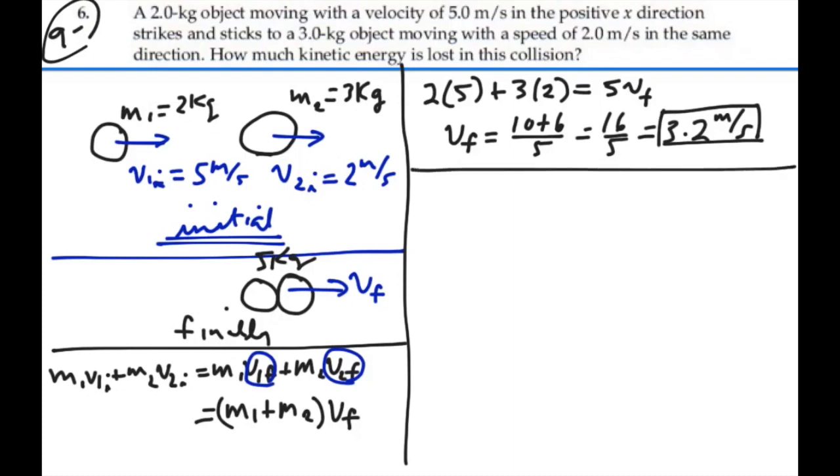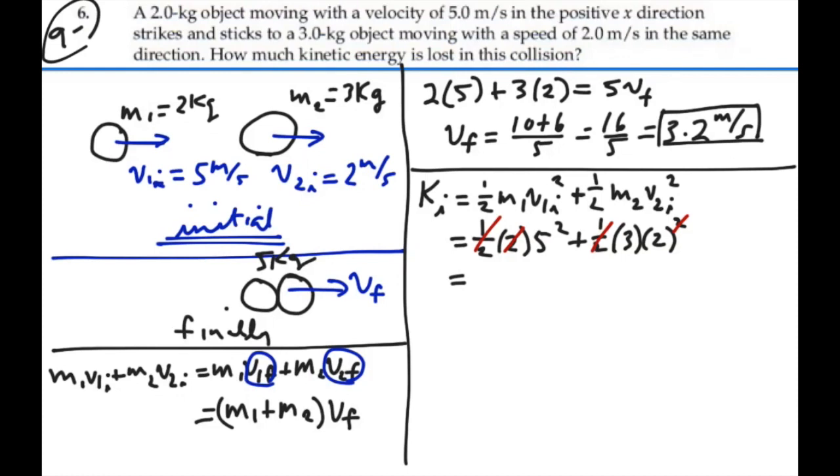We figured out the final velocity, but now we want to find our change in kinetic energy, so we need to find our initial kinetic energy and our final kinetic energy. Initially, it's 1 half mass 1 v1 initial squared plus 1 half mass 2 v2 initial squared. That is 1 half times 2 times 5 squared plus 1 half times 3 times 2 squared. So that is 25 plus 6, or 31 joules, is our initial kinetic energy.